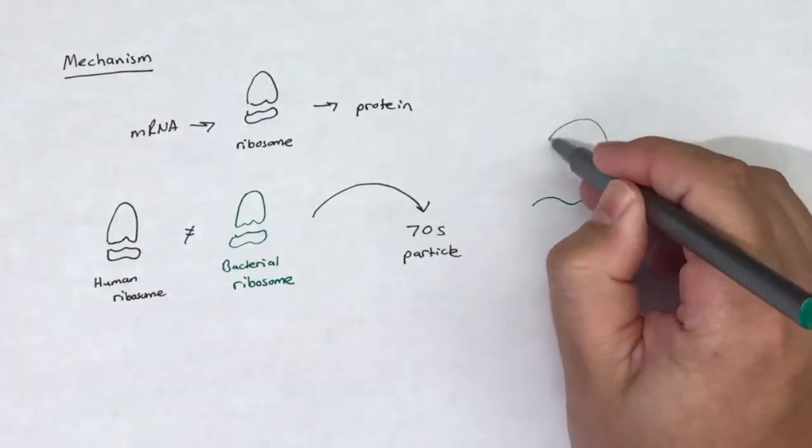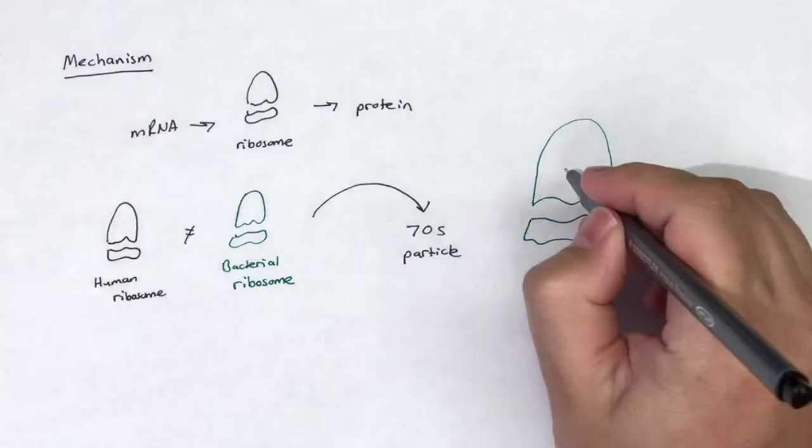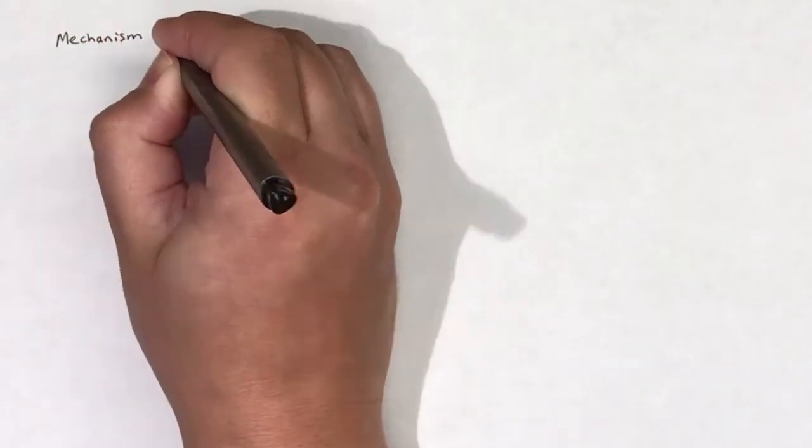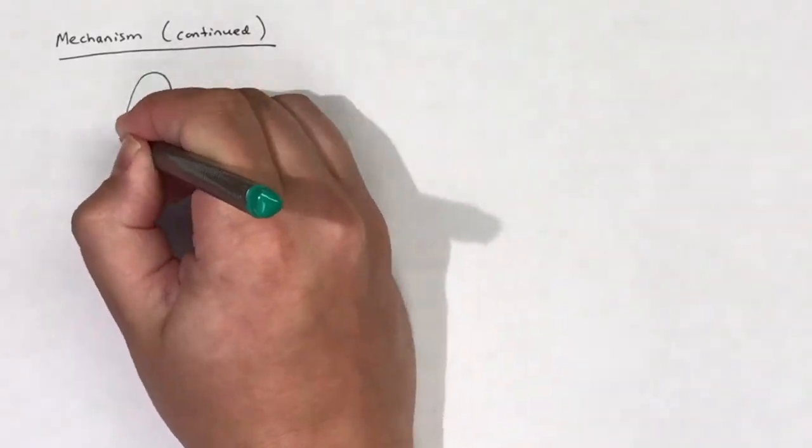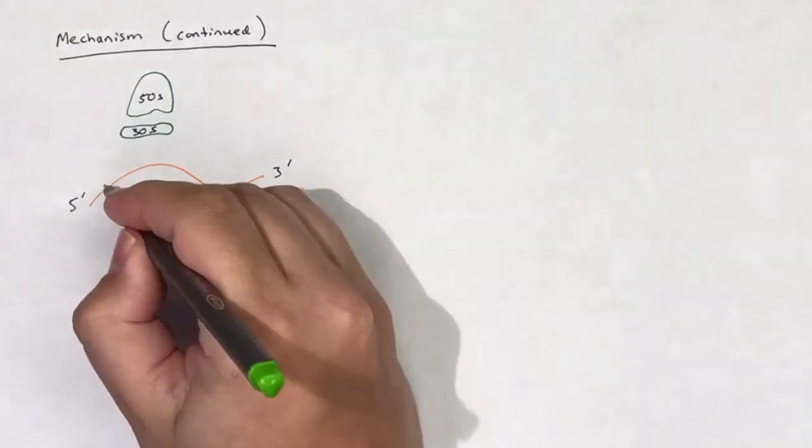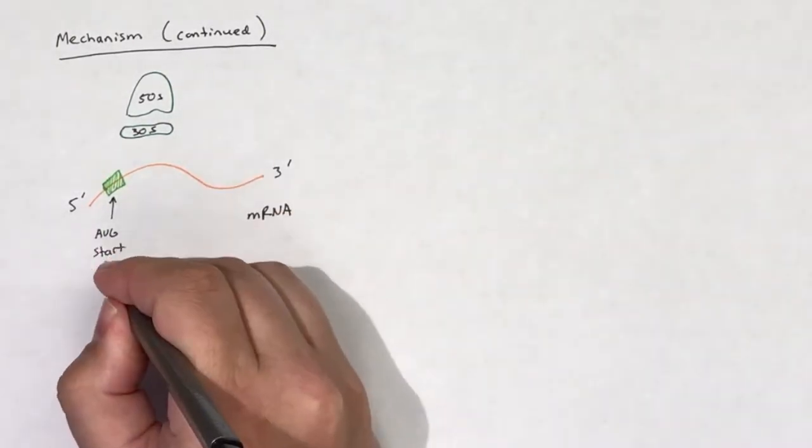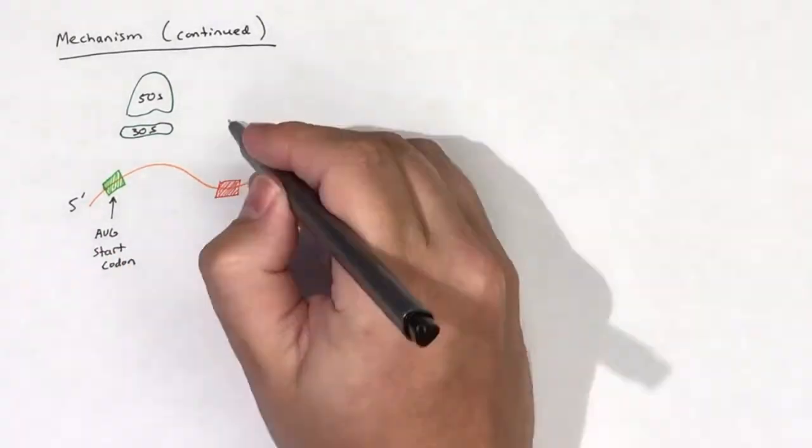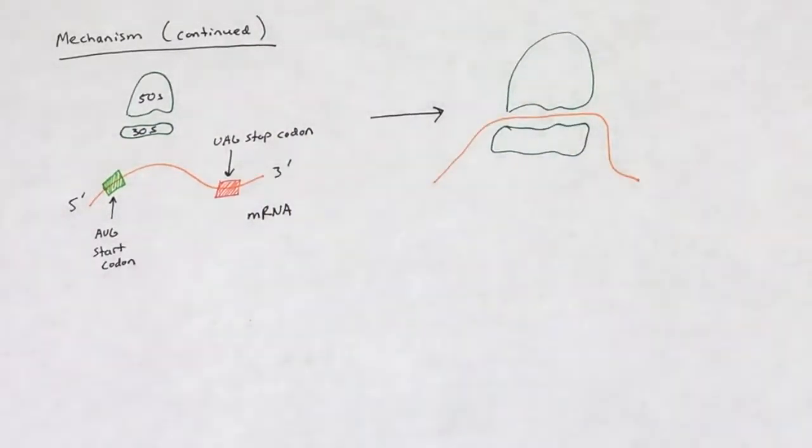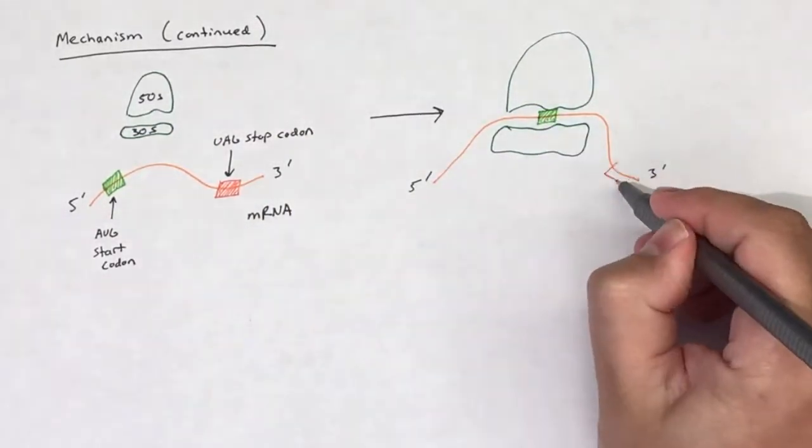Bacterial ribosomes are made up of a 70S particle consisting of a 50S large and 30S small subunit. Specifically, oxazolidinones bind to the peptidyl site or P site on the 50S ribosomal subunit. This binding prevents the initiation of protein synthesis by preventing the formation of the ribosomal N-formyl methionine or F-MET tRNA complex.